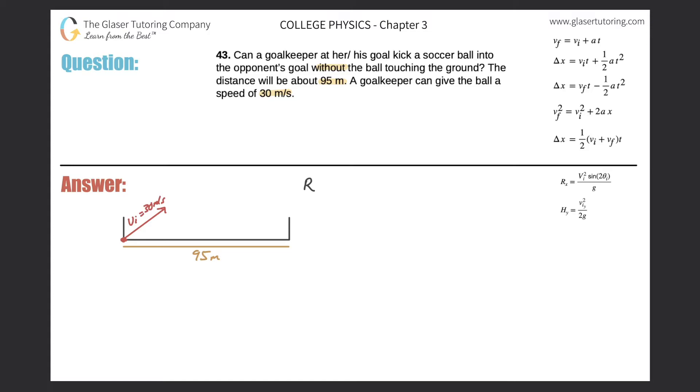What we're really looking for is to calculate the range of the soccer ball if this goalkeeper is able to impart an initial velocity of 30 meters per second. So how do we do that? Well, it sounds like we need another piece of information and we do.